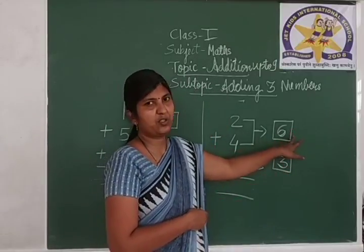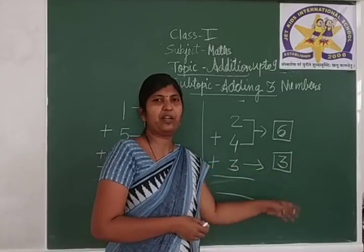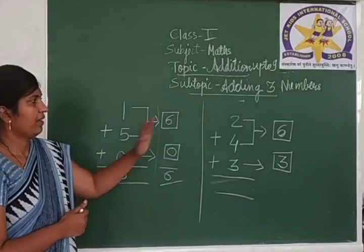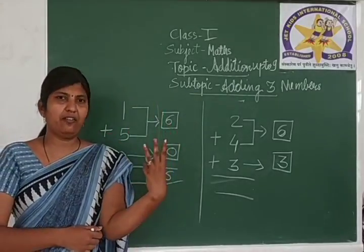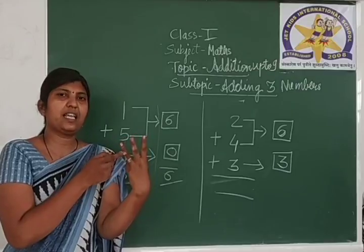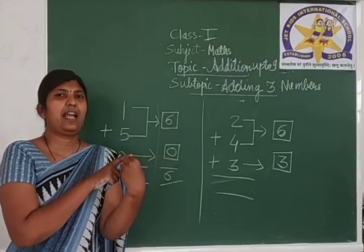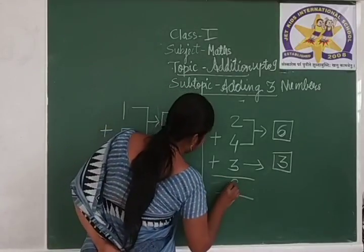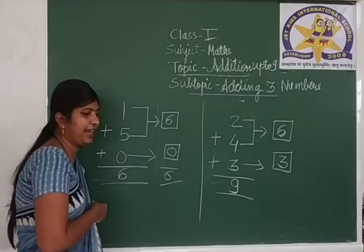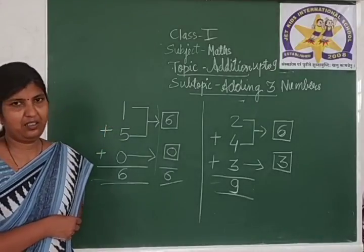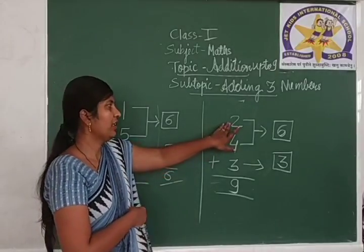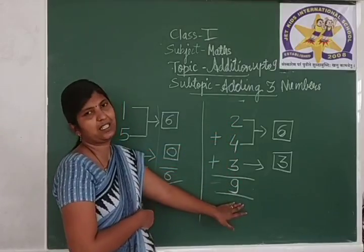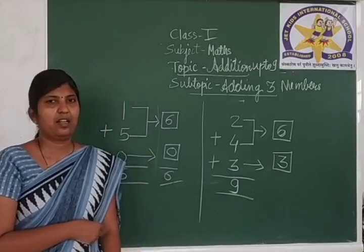We got the sum of 2 and 4, which is 6, and the remaining number 3. We are going to add these 2 numbers. 6 in your mind, 3 on your finger. Count after 6: 7, 8 and 9. We got the answer 9. Write down 9 here. 2 plus 4 plus 3 equals 9.